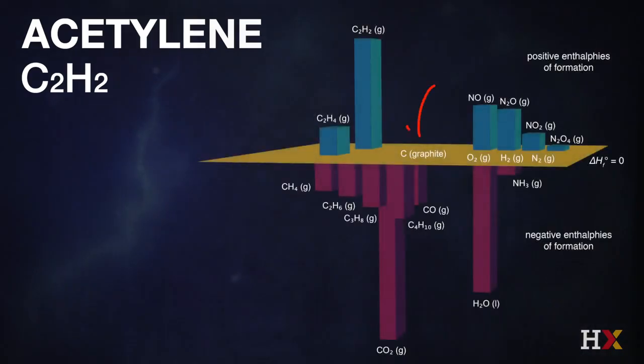The standard enthalpy scale is created so that every single molecule involved in any reaction — take acetylene, C2H2 — we can measure the amount of energy required to produce it from carbon, where the standard state of carbon is graphite, and the standard states of oxygen, hydrogen, and nitrogen are their free gas phase states: the state they exist in the atmosphere before reacting with any other species.